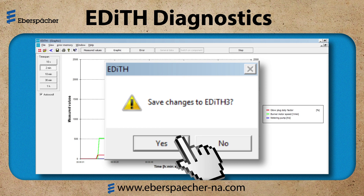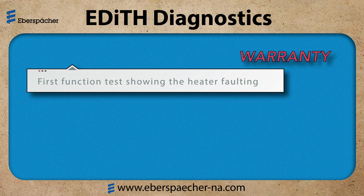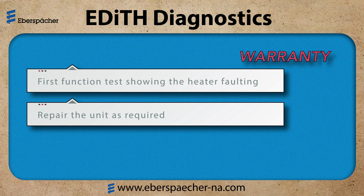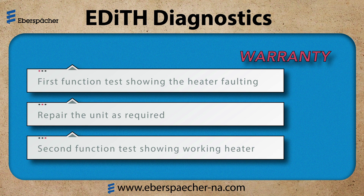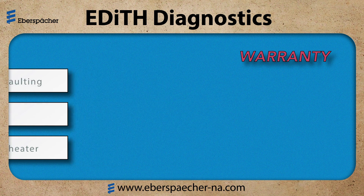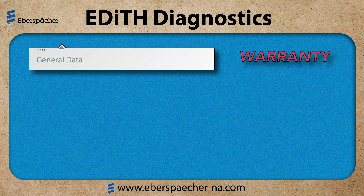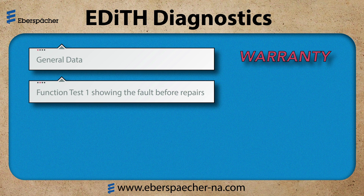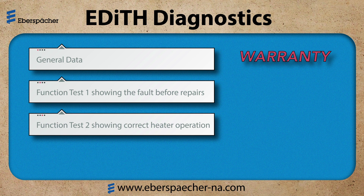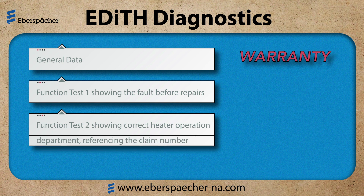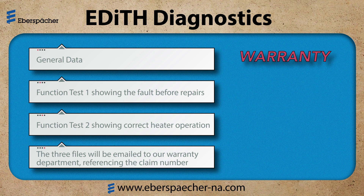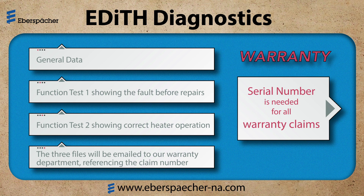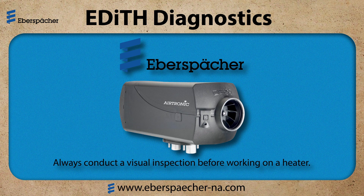If this is a warranty case, I need to save the test. I should have the first function test showing the heater faulting. I will make the repair as required and then complete a second function test. The test saves needed for warranty are General Data, Function Test 1 showing the fault before repairs, and Function Test 2 showing the correct heater operation. The three files will be emailed to our warranty department referencing the claim number. Remember, the serial number is needed for all warranty. Always conduct a visual inspection before working on a heater. Thank you.